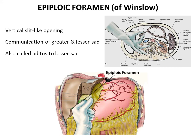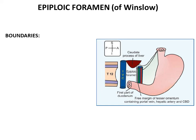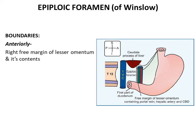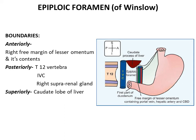With a finger through the epiploic foramen and the thumb between them, the structures in the right free margin of the lesser omentum — which also form the anterior boundary of the epiploic foramen — can be seen: the bile duct, the portal vein, and the hepatic artery. Posteriorly lies the 12th thoracic vertebra, inferior vena cava, and the right suprarenal gland. Superiorly it is bounded by the caudate lobe of the liver, and inferiorly lies the first part of the duodenum along with the horizontal part of the hepatic artery.